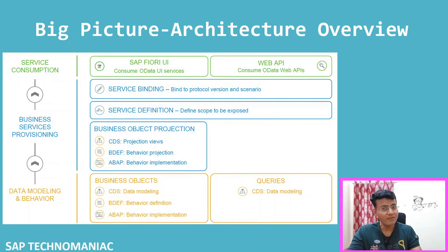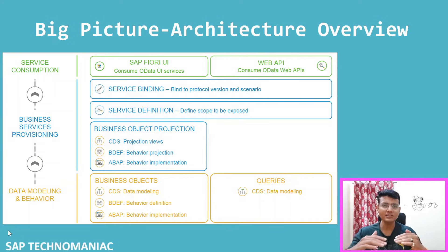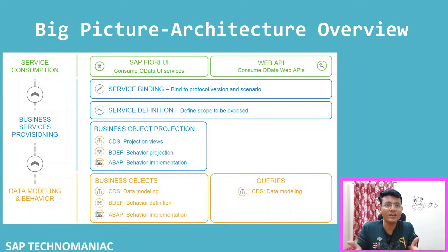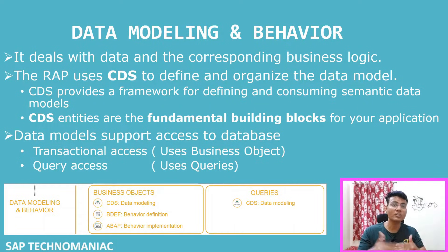I have given just an overview; we will go into each part in depth. Today our focus will be on the first task - how we can define our data model and behavior. The CDS data modeling and behavior is the first layer of our development task to build an OData service and create a RAP application.